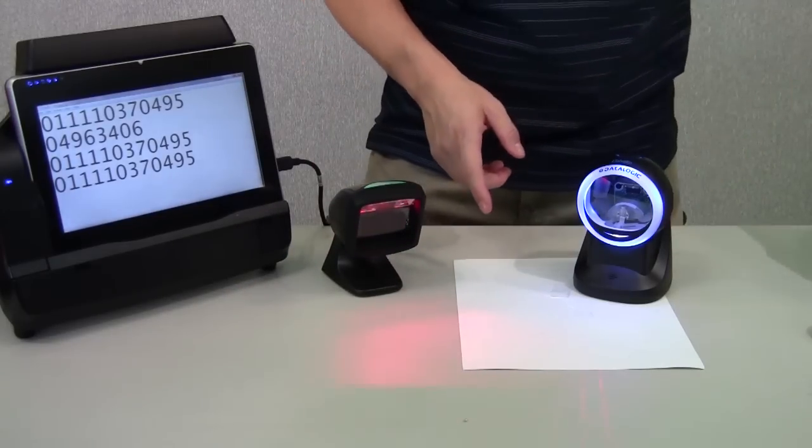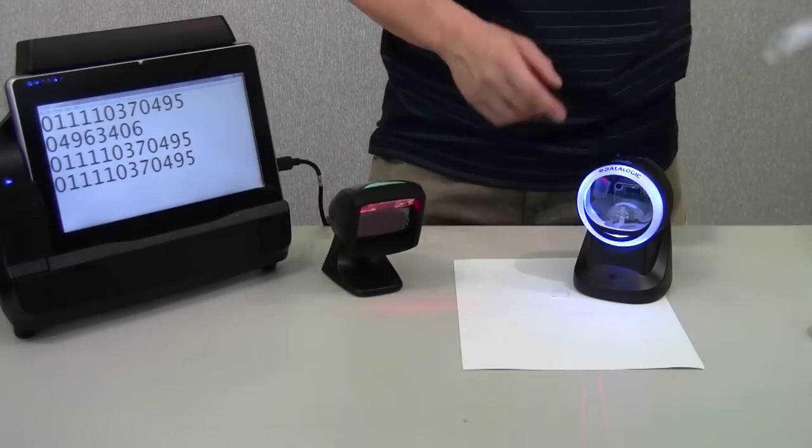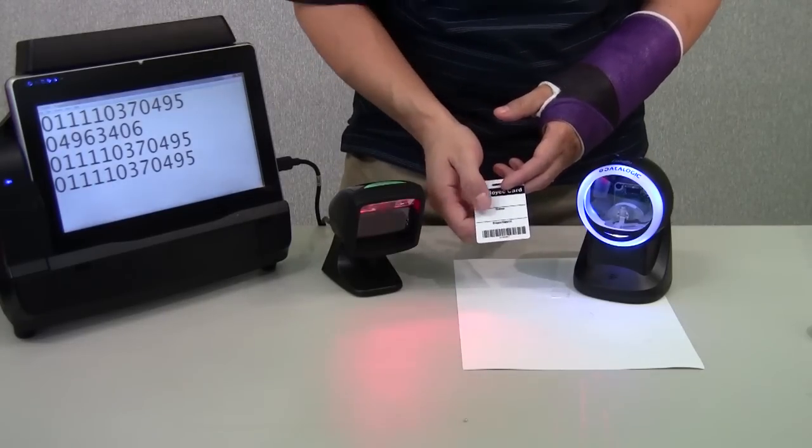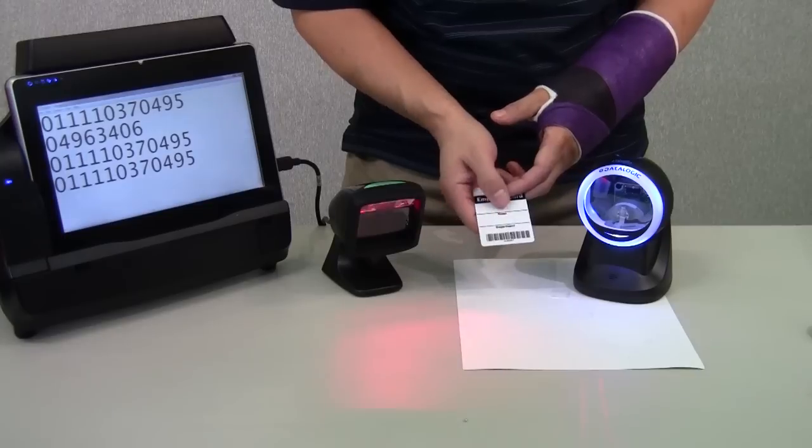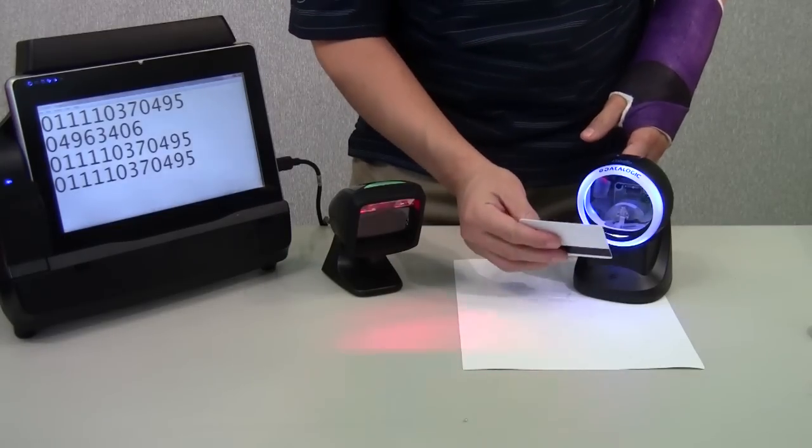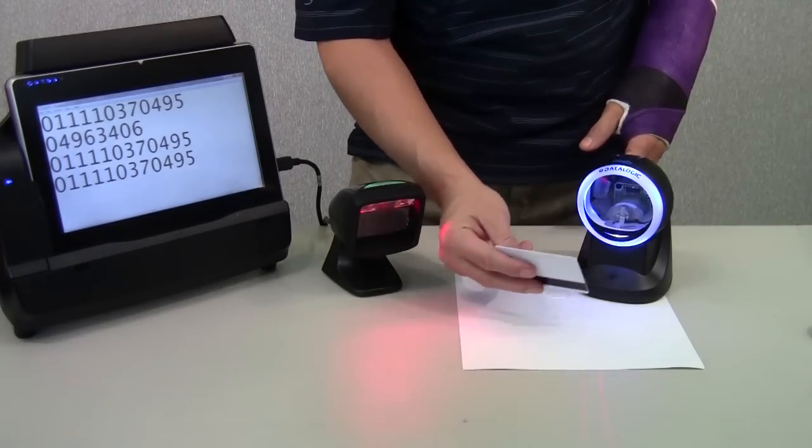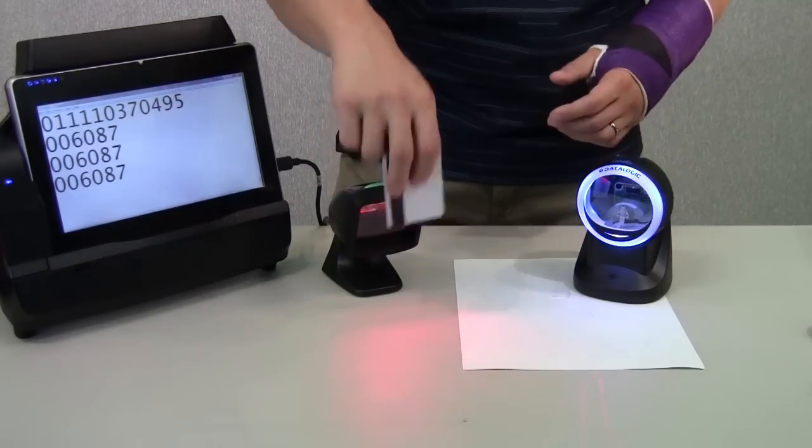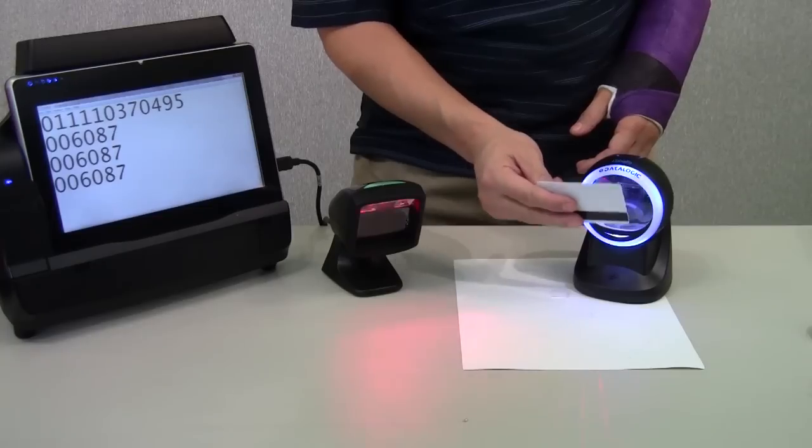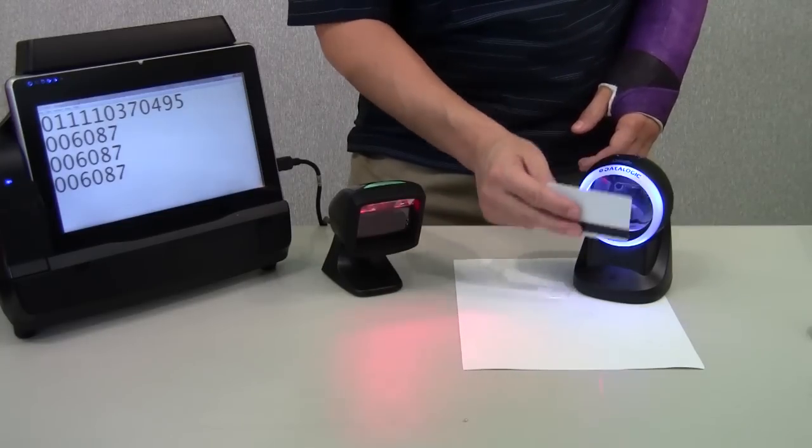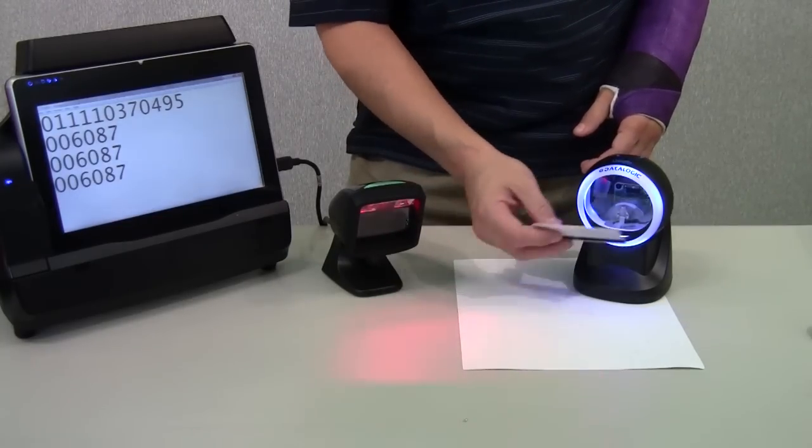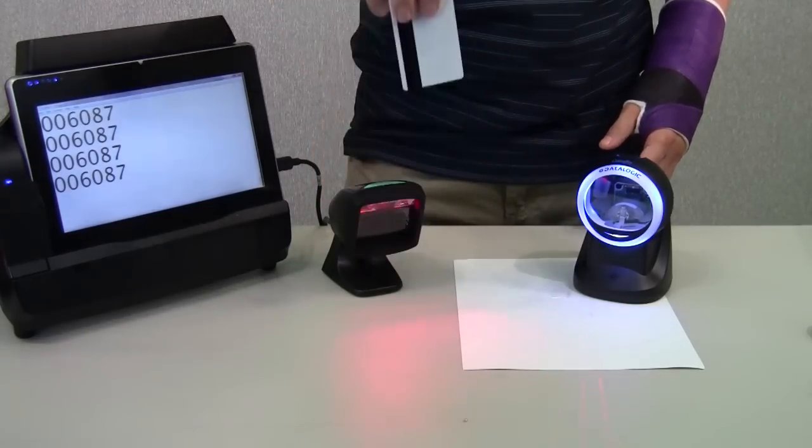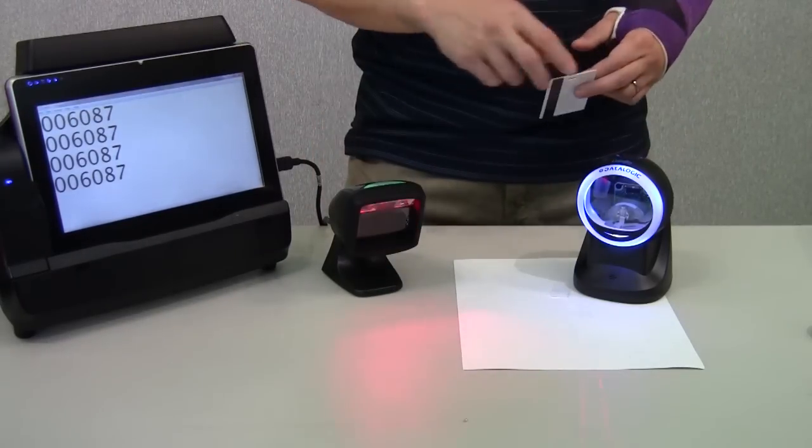One problem that we've had with a laser scanner is on glossy surfaces. So under our studio lights here, it's actually a little bright. This is a glossy card. We've had problems reading in this scenario. The imager doesn't have the same kind of problem as the laser scanner. So keep that in mind. Depending on what kind of barcodes you're going to be scanning, you may need one barcode scanner versus the other.